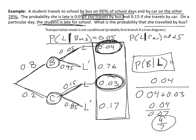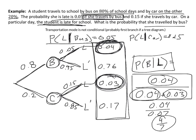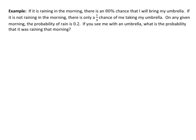Let's move on and look at another example. This problem is very similar to the previous one — I'd really encourage you to pause the video and do as much as you can on your own, then check your work as you go along. It says: if it's raining in the morning, there's an 80% chance I'll bring my umbrella. If it's not raining, there's only a one-in-four chance I'll take my umbrella. On any given morning, the probability of rain is 20% or 0.2. If you see me with an umbrella, what's the probability that it's raining?